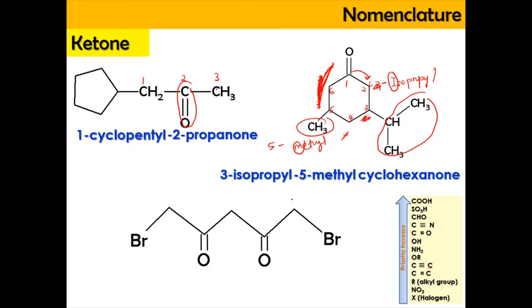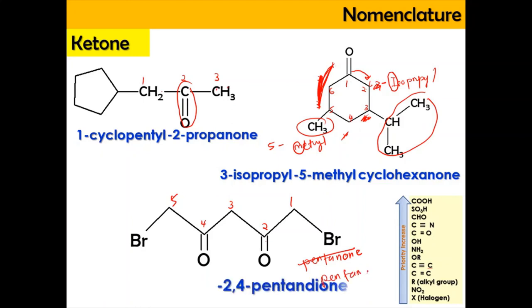For the last structure, we have five carbons — 1, 2, 3, 4, 5 — giving pentanone, but with two ketone groups at positions 2 and 4. At carbons 1 and 5, there are bromine substituents. So the full name is 1,5-dibromo-2,4-pentanedione.